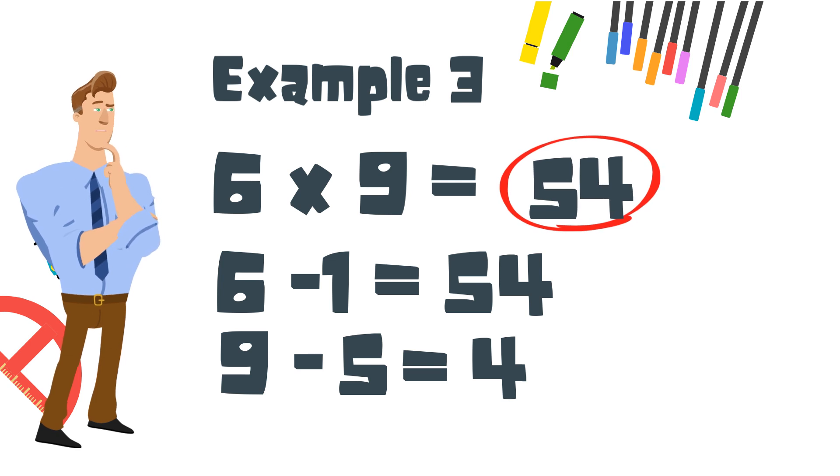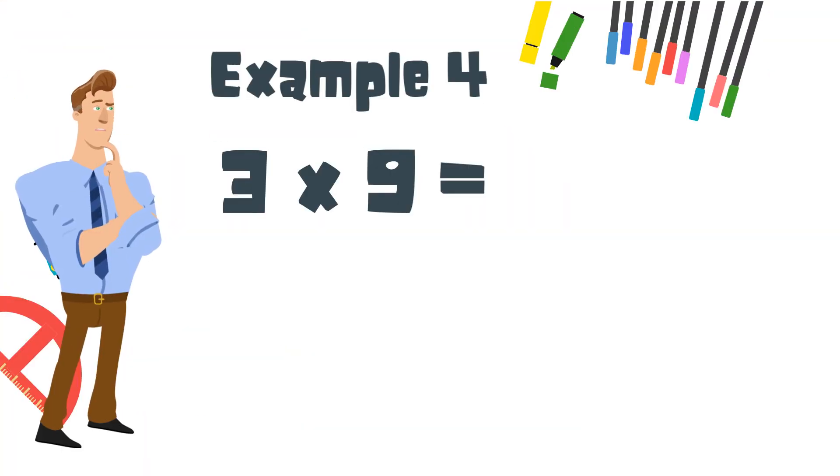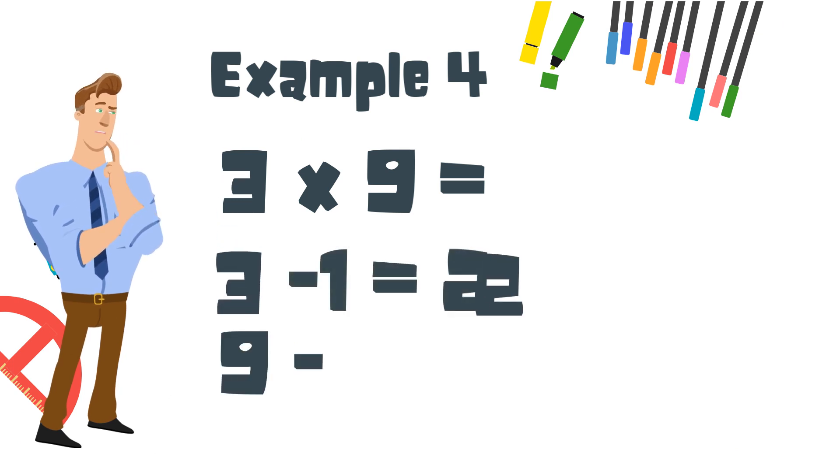And finally, 3 times 9. Step 1. 3 minus 1 equals 2. Step 2. 9 minus 2 equals 7. So, 3 times 9 equals 27.